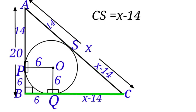So line BC equals to BQ plus QC. So BC equals to 6 plus X minus 14. BC equals to X minus 8.